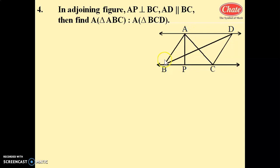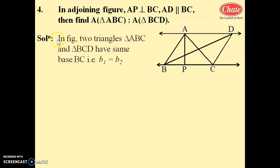Triangle ABC is here and triangle BCD is here. So if AD and BC are two parallel lines, then height is the same. In the figure, two triangles ABC and triangle BCD have the same base BC.